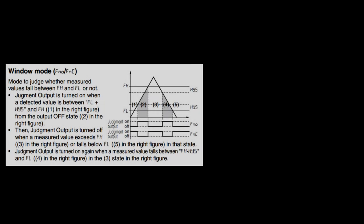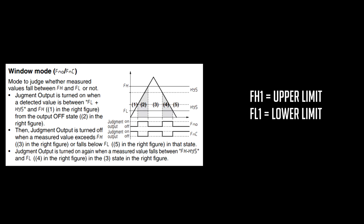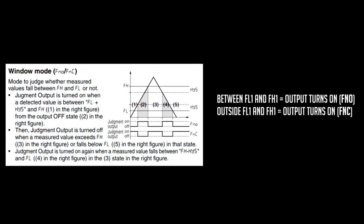The other discrete output detection mode that we have is window mode. In this detection mode, you need to set an FH, or upper limit, and an FL, or lower limit. Once your upper and your lower limit are defined, if your window normally open, your output will turn on in between this lower and upper limit. In window normally closed, your output will turn on outside of your lower and upper limit.